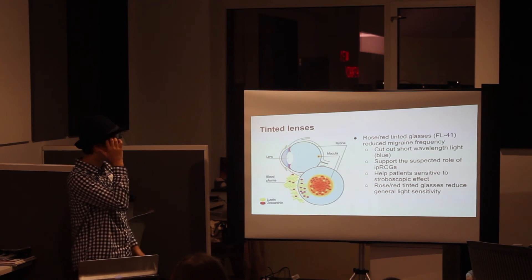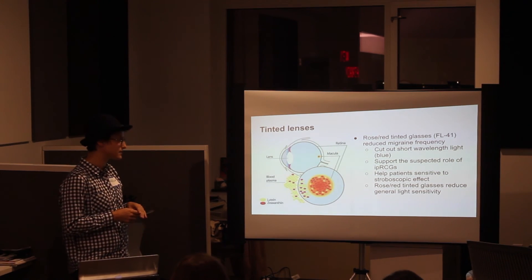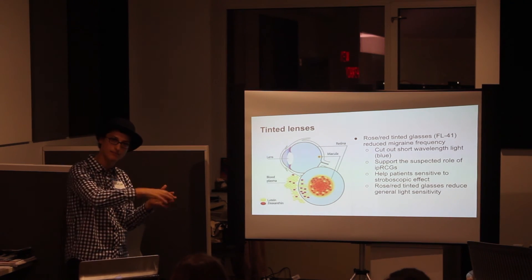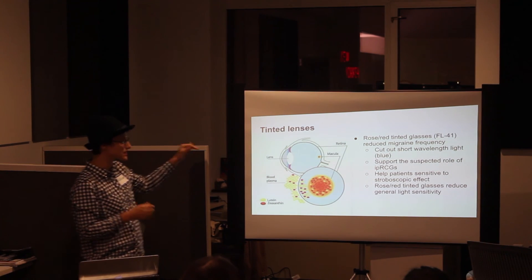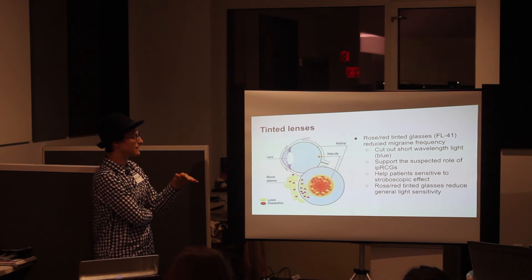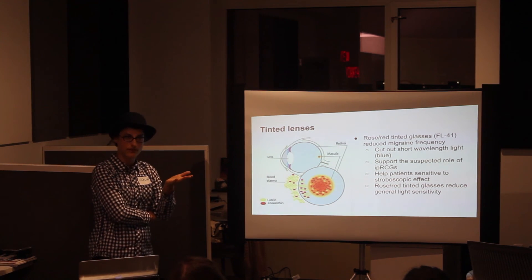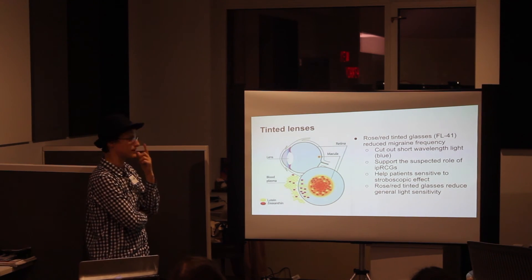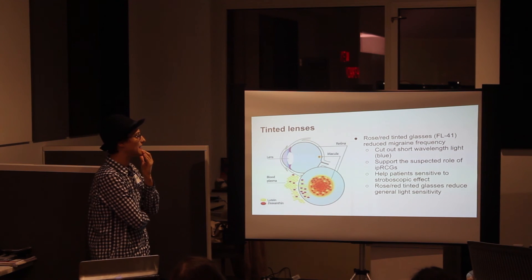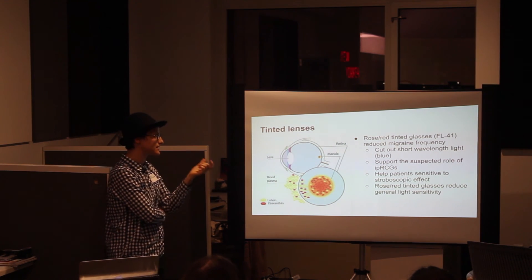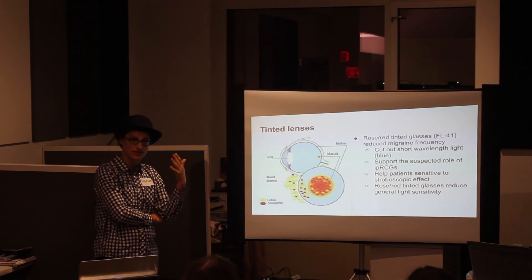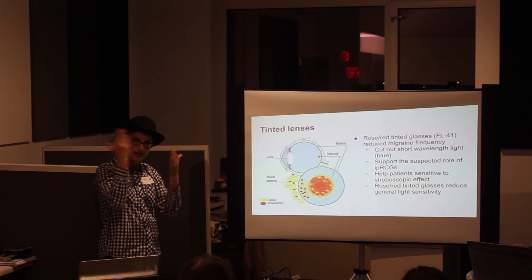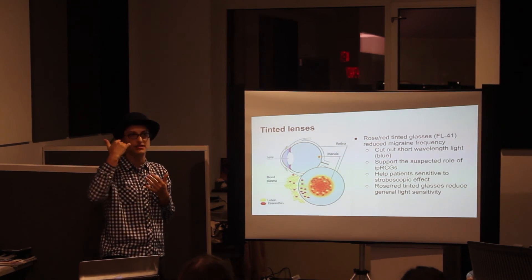How could this be addressed? What supports the idea that IPRGCs are involved in the migraine pain network? Rose or red-tinted lenses. People have been using these on their own for a while. Red or rose-tinted glasses have been found to reduce migraine frequency or sensitivity during photophobia. The idea is that they cut out short-wavelength light — blocking that signal to your IPRGCs from reaching the brain.